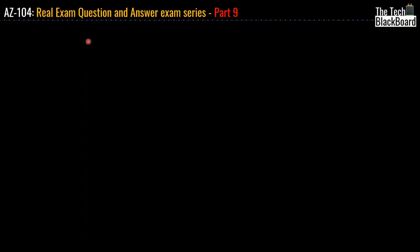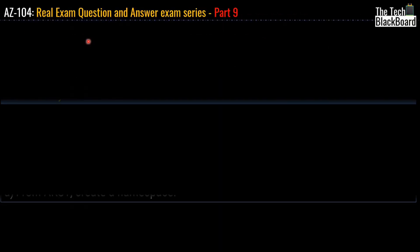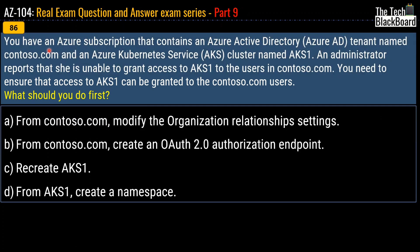Now let's kick start our part 9 with question number 86. The question says that you have an Azure subscription that contains an Azure Active Directory tenant named Contoso and an Azure Kubernetes Service cluster named AKS1. An administrator reports that she is unable to grant access to AKS to the user in Contoso.com. You need to ensure that access to AKS1 can be granted to Contoso.com users. What should you do first?